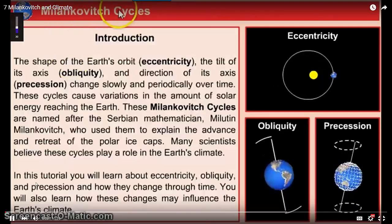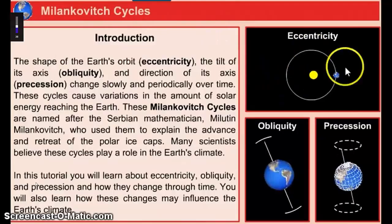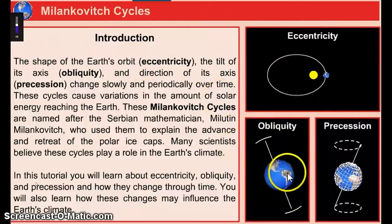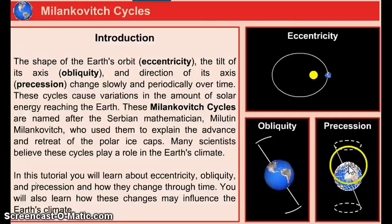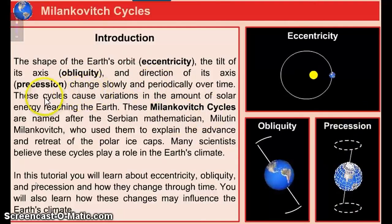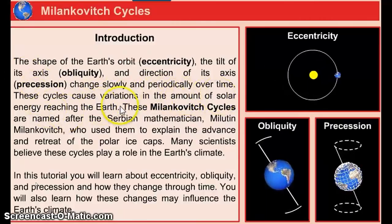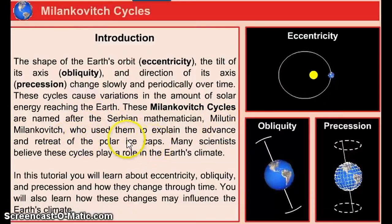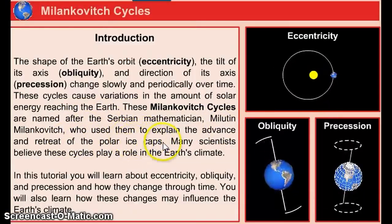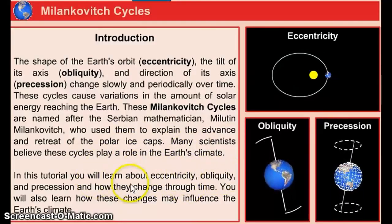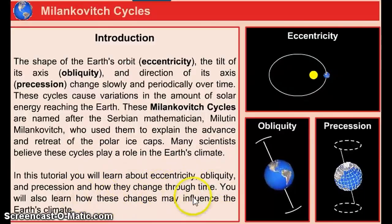Milankovitch cycles are named after Serbian mathematician Milutin Milankovitch, who used them to explain the advance and retreat of polar ice caps. Many scientists believe these play a critical role in Earth's climate. Eccentricity refers to how elliptical the orbit is; obliquity refers to the axial tilt; and precession is the wobble of the axis direction. These variations change the amount of solar energy reaching the Earth.